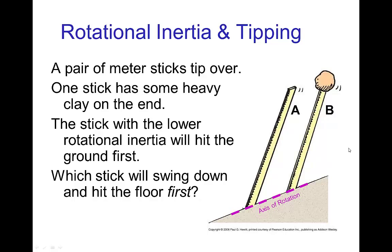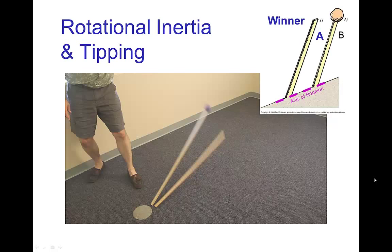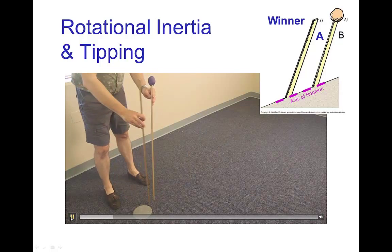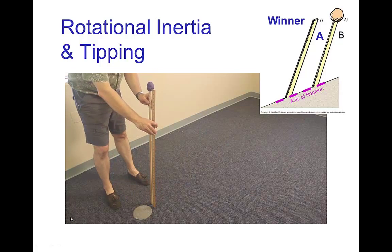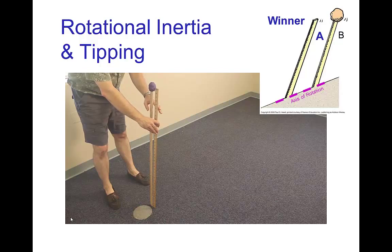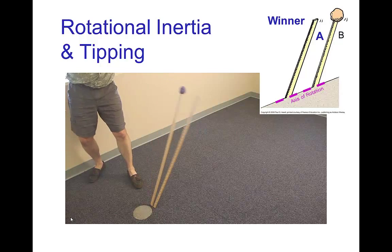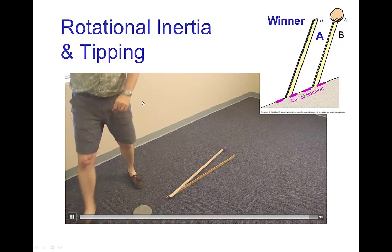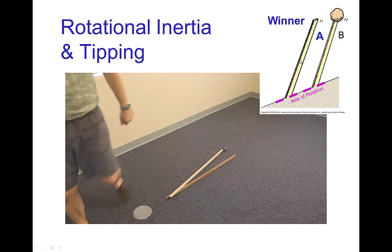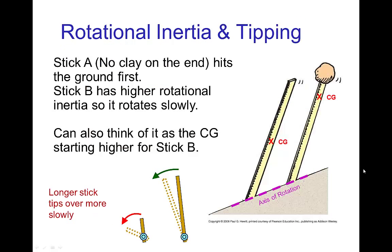Which one is going to hit the ground first or will it be a tie? I can tell you the one with the lower rotational inertia will hit the ground first and that would be the stick that does not have weight on the end. And so here we see the sticks, get ready for it. So the winner, the one with the lower rotational inertia was the stick without the weight.